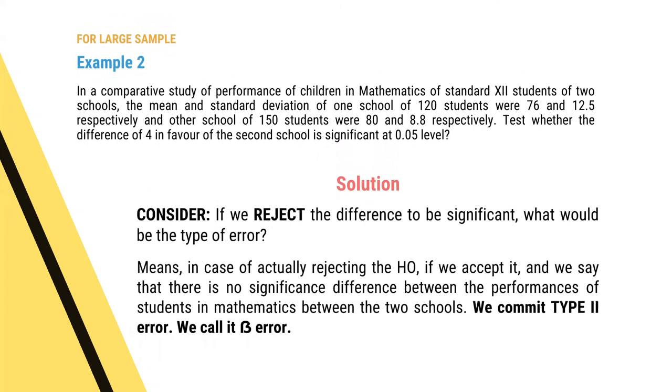Consider: if we reject the difference as significant when we should accept the null hypothesis — that is, if we say there is no significant difference between the performance of students in mathematics between the two schools when there actually is — we are committing a Type 2 error, also called beta error. The type of error is very important and needs to be minimized by carefully estimating and interpreting the solution.